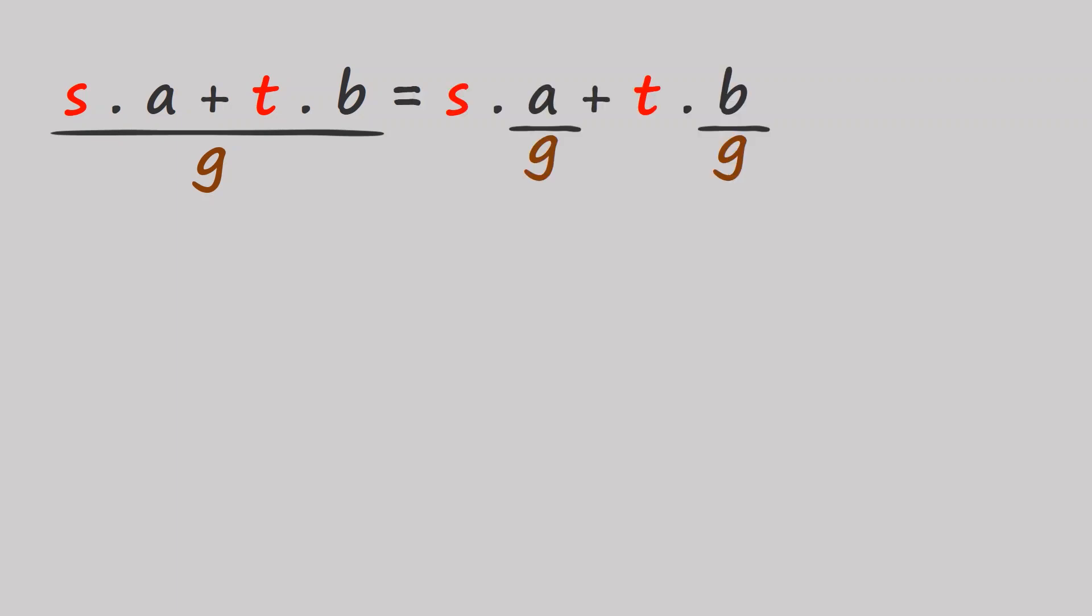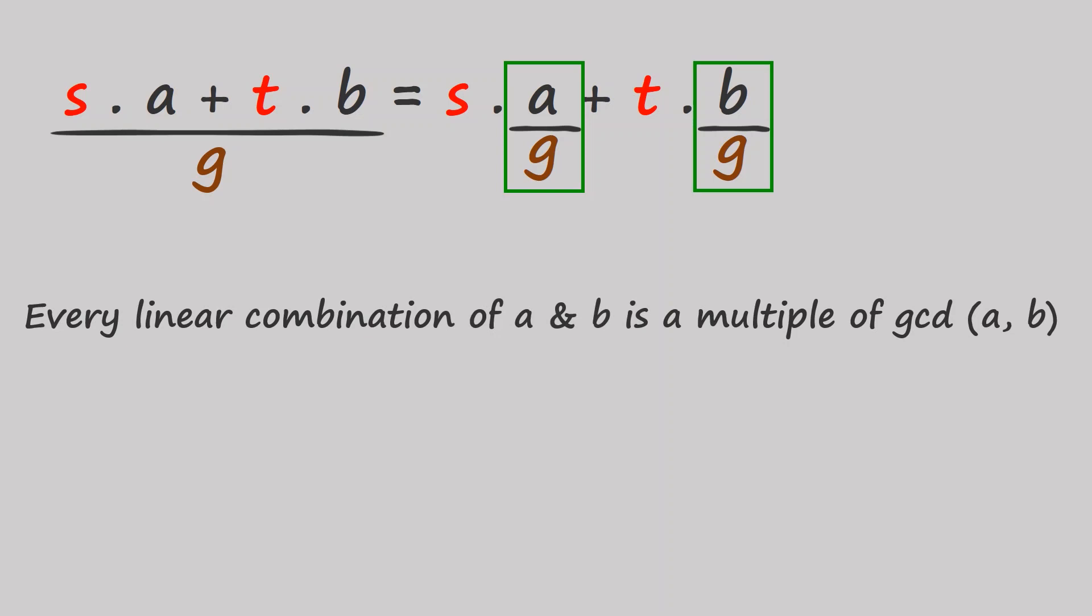Because G divides both a and b, and because s and t are integers, this whole term will be an integer. This means that G not only divides a and b, but also divides any linear combination of a and b. Or in other words, every linear combination of a and b is a multiple of their greatest common divisor.